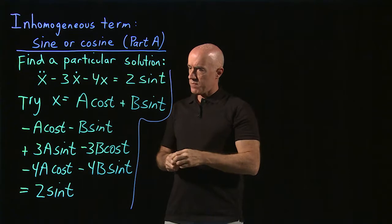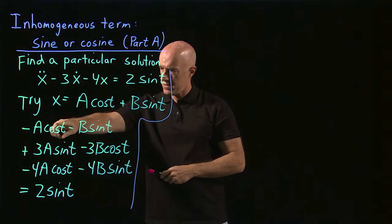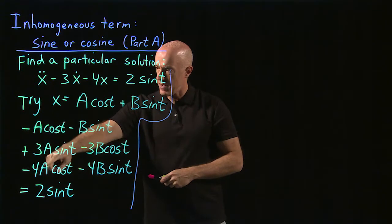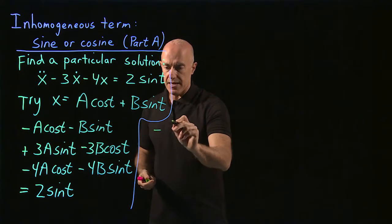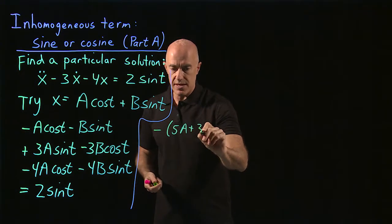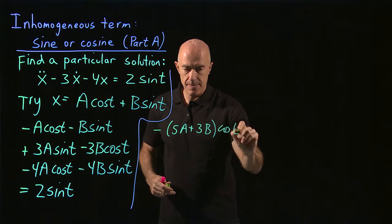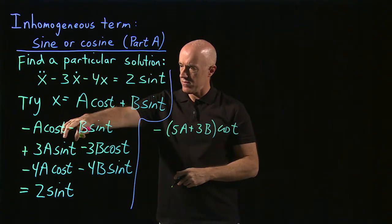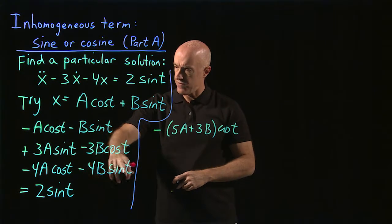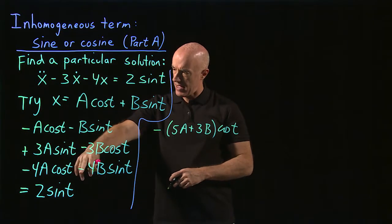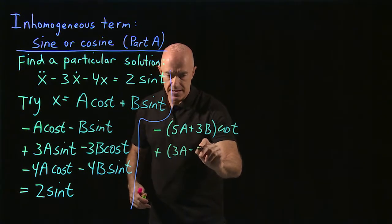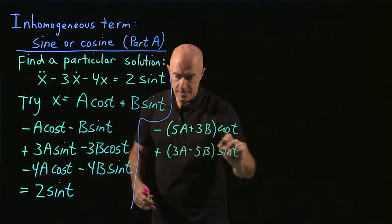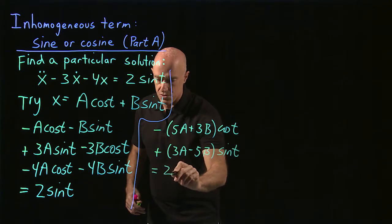For the terms multiplying cosine: we have minus a, minus 4a, and minus 3b, giving negative 5a plus 3b times cosine t. For the terms multiplying sine: we have minus b sine t, minus 4b sine t, and plus 3a sine t, giving 3a minus 5b times sine t. And that's supposed to be equal to 2 sine t.